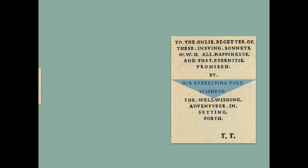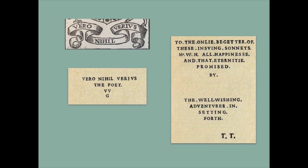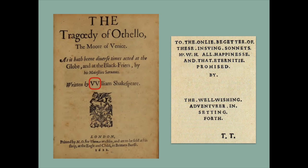Now the fourth time: back to the dedication. The very central triangle is actually a perfect anagram. If we take those letters out, we have 'vero nihil varius, the poet, double V, G' — G is God. Double V — what is that? De Ver, de Ver perhaps. Indeed, if you look at Edward de Vere's family motto: 'vero nihil varius' — that's exactly what we've got on the top line. You can see the two V's very prominently — double V, double V.